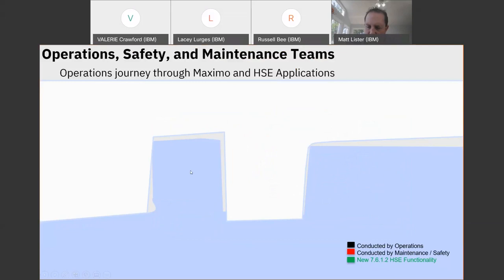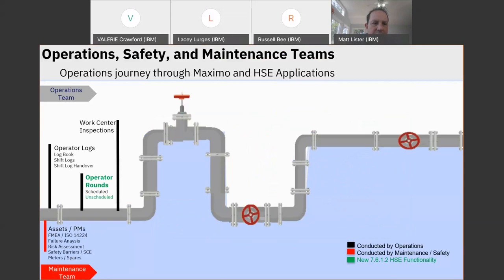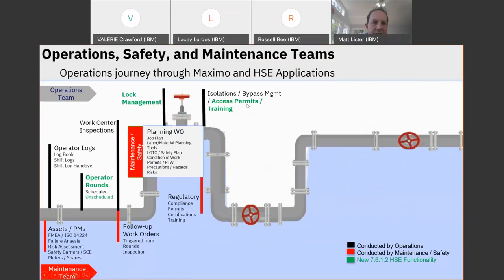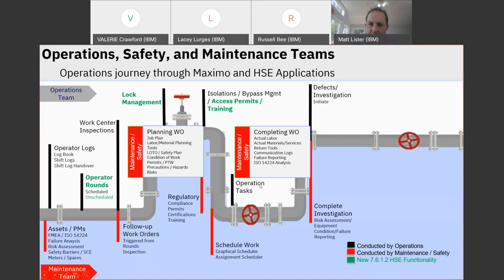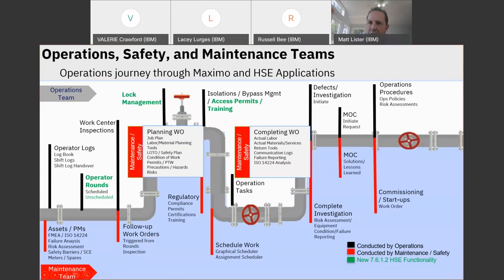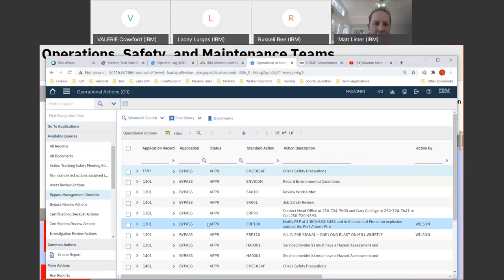Let me go back to the journey. We went through operator logs, inspection rounds — both scheduled and unscheduled — and followed up with some maintenance work orders. We looked at new functionality around access permits, training, and lock management. We scheduled the work and assigned some operator tasks, then followed that up with an investigation. The investigation led into a management of change for the configuration, and we looked at how you can attach operating procedures and policies at the task level.